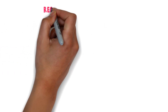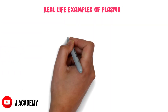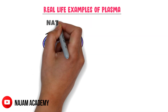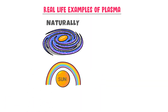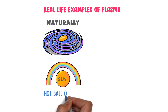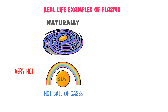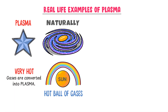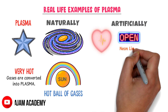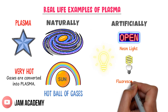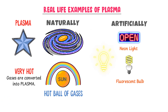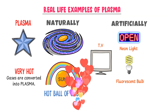Now what are some real life examples of plasma? Plasma is found everywhere in the universe. Naturally, plasma is found in the sun. We know that the sun is a hot ball of gases made up of mostly hydrogen. The sun is very hot, due to which gases are converted into plasma. Many stars in the universe contain plasma. On the other hand, we can also produce plasma artificially. For example, the neon light contains plasma. Electricity and fluorescent lights create plasma. Flat screen televisions also contain plasma.